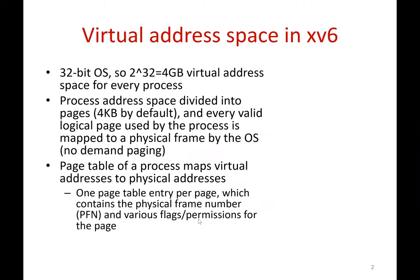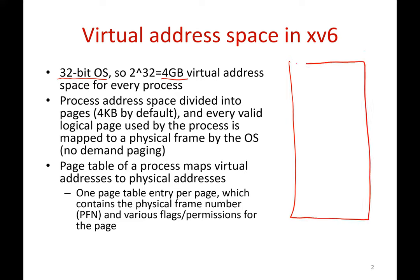Let us understand how the virtual address space of a process looks in xv6. xv6 is a 32-bit operating system, so you have 2 to the 32, that is 4 gigabytes of virtual address space for every process. The virtual address space of a process is divided into multiple pages, say 4KB pages. Each of these valid logical pages is mapped to a physical frame by the operating system.